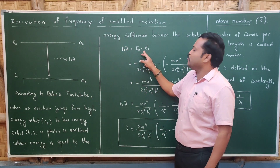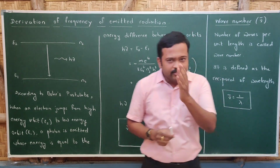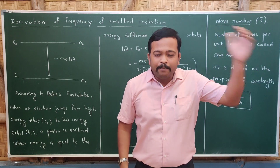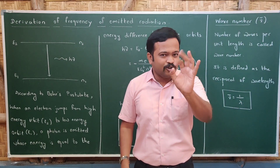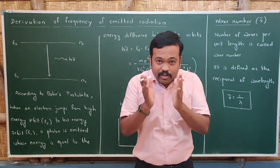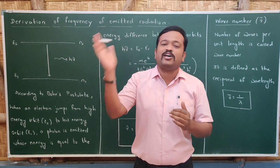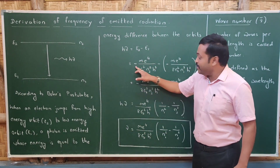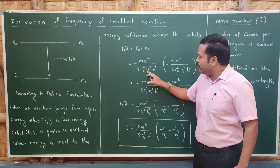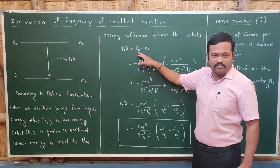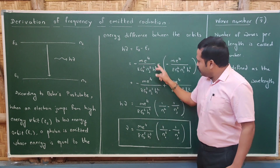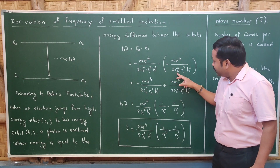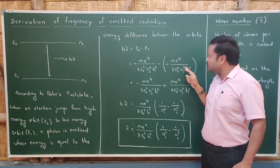That hν is equal to E2 minus E1. We have already derived the energy of the nth orbit: E equals minus me⁴ divided by 8ε₀²n²h². The energy of the orbit is negative because electrons are bound to the nucleus. Substituting for E2: minus me⁴ divided by 8ε₀²n2²h², minus E1: minus me⁴ divided by 8ε₀²n1²h².